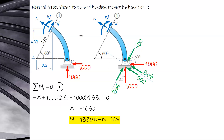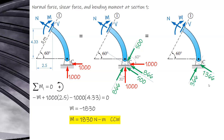Remove the original resultants and combine the green components along each axis. Adding gives 866 plus 500 equals 1,366. Subtracting gives 866 minus 500 equals 366. The net force is 366 along one axis, first quadrant.